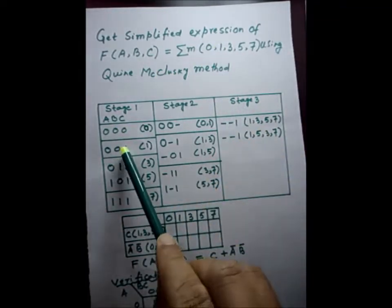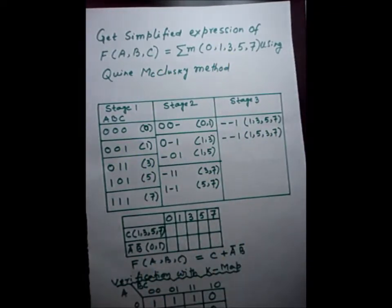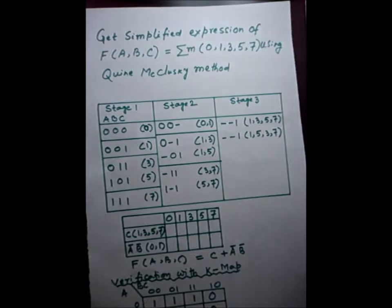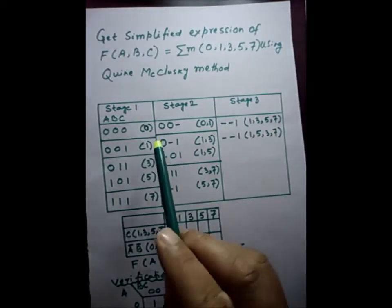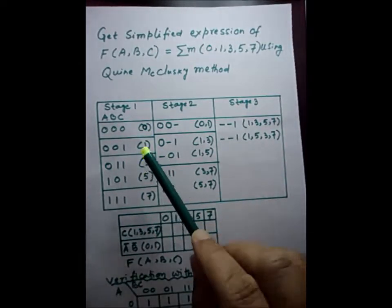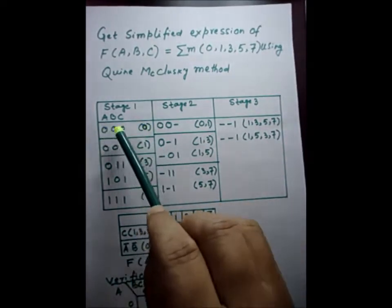So we have 0, 1, 3, 5, and 7. In the first group, the number of ones is zero; here it is one; here it is two; and here it is three. Grouping in the first stage should be done according to the number of ones in that binary number. On the right-hand side, we are writing the decimal equivalent of that binary number.